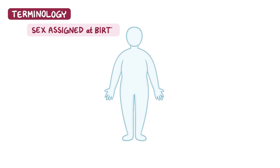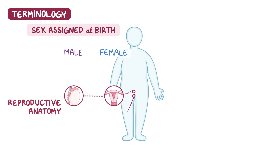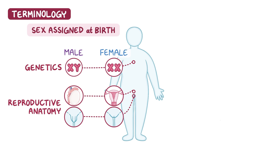Sex assigned at birth is classified as male or female and is based on one's reproductive anatomy at the time of birth, and occasionally genetics. Of note, intersex refers to a person with sex traits such as genetics, hormones, or reproductive anatomy that don't fit the typical classification of male or female sexes.